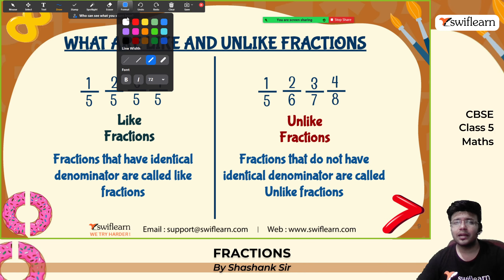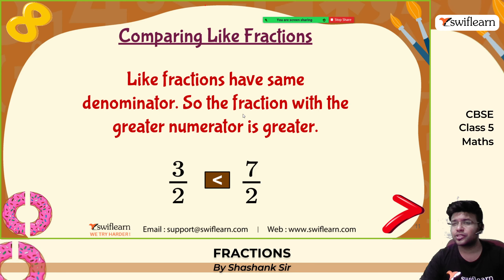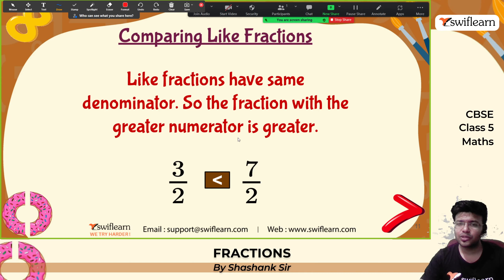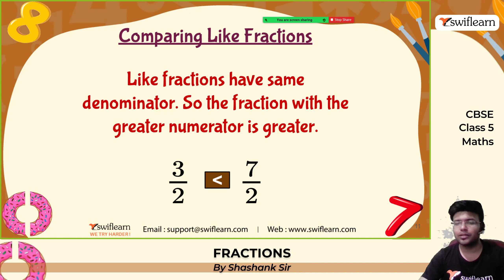Now, comparison of fractions. We can compare two fractions to find whether one fraction is equal to, greater than, or smaller than the other. For like fractions that have the same denominator, the fraction with the greater numerator is the greater fraction. For example: 3 by 2 and 7 by 2 are like fractions because the denominators are the same. Since 7 is greater than 3, therefore 7 by 2 is greater than 3 by 2.